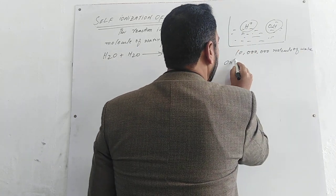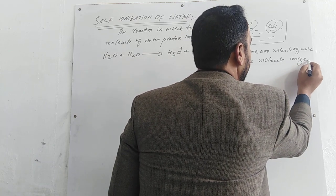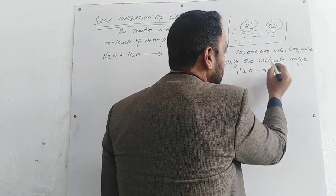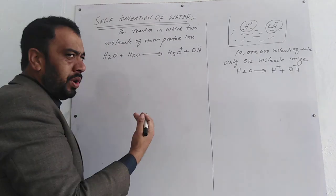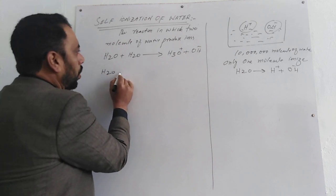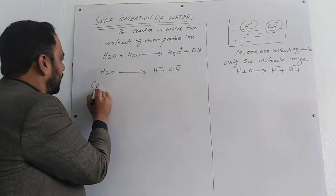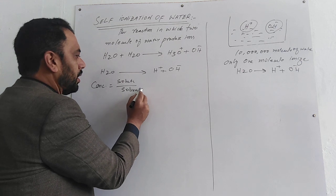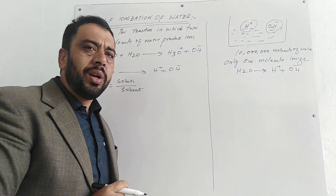Only one molecule out of 10 million molecules of water is ionized — sirf 10 million mein 1 molecule ionize hota hai H2O mein. To produce H⁺ and OH⁻ ions, main 1 molecule leta hoon H2O. So H⁺ and OH⁻ ion concentration hamare saath barabar hai. Number of solute and solvent — 10 million mein hamare saath 1 molecule ionize hota hai.